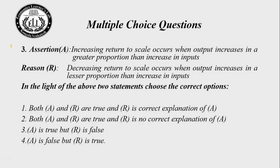Question 3 (Assertion-Reason): Assertion A — increasing returns to scale occurs when output increases in a greater proportion than the increase in inputs. Reason R — decreasing returns to scale occurs when output increases in a lesser proportion than the increase in inputs. Both statements are true, but R is not the correct explanation of A, because the two statements describe different concepts. The answer is choice 2.